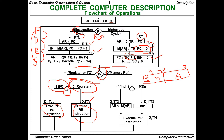Once the interrupt is serviced, PC gets incremented and IEN is cleared to 0. Previously IEN was 1, meaning interrupt was enabled; once the interrupt is resolved, the IEN flag is cleared to 0. R is set to 0 and the sequence counter is set to 0, returning to the cyclic check of R=0 or R=1.